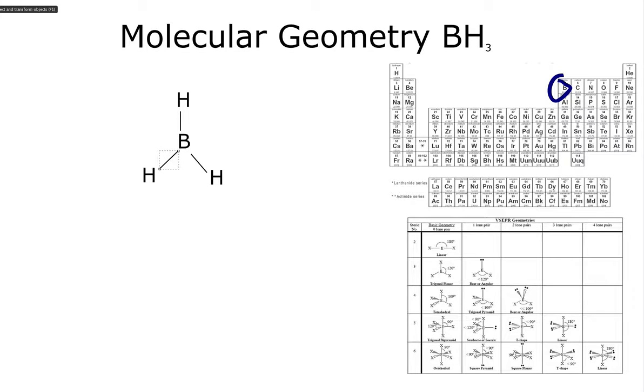Now if we look at this boron, it does not have an octet, which is okay in this case because our molecule is neutral. If you go ahead and do the formal charge on boron, it should come out as zero because it's found in group 3, we're only sharing three bonds, we have no lone pairs. So 3 minus 3 is 0, which is okay, neutral, so that's all good.